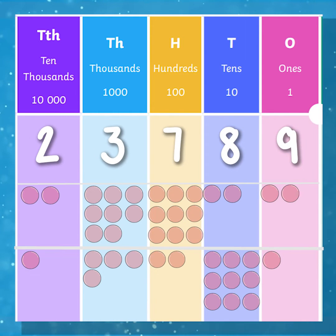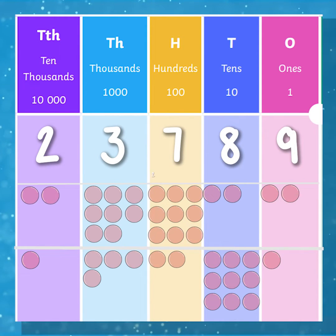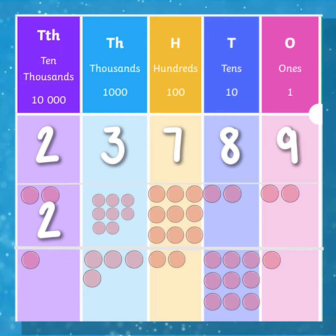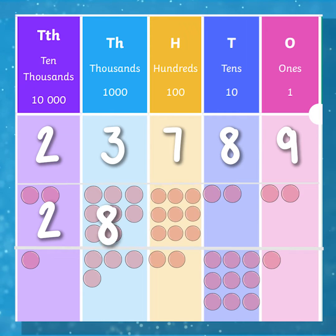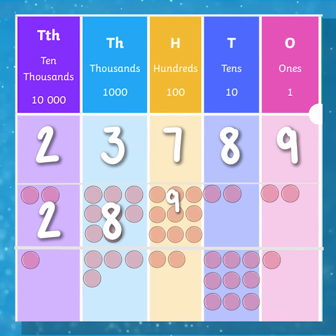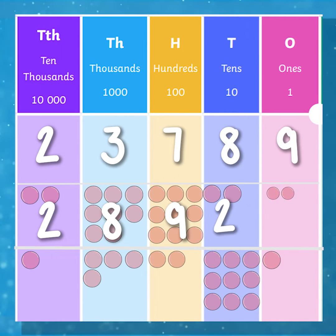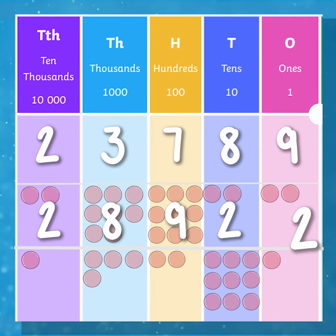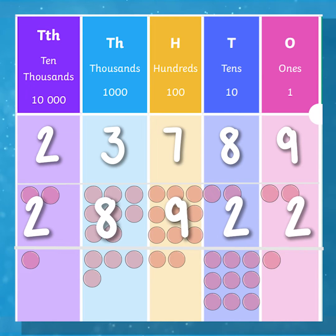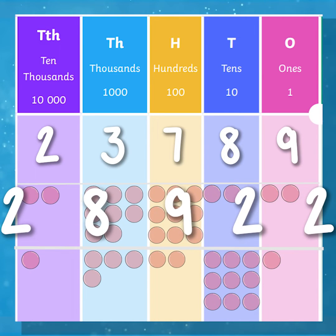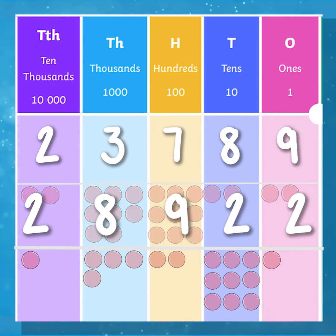Our second number has a two in the ten thousands, an eight in the thousands, a nine in the hundreds, a two in the tens, and a two in the ones. So the second number is 28,922.